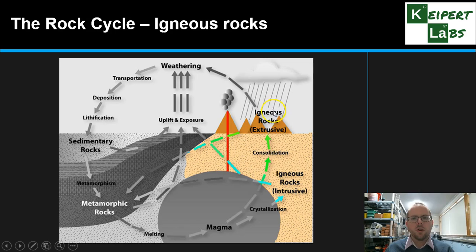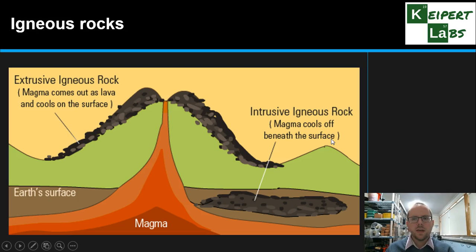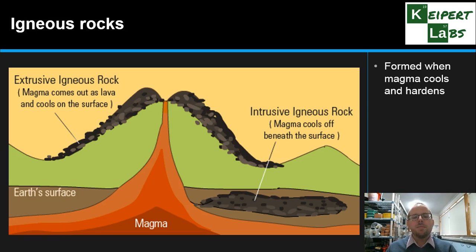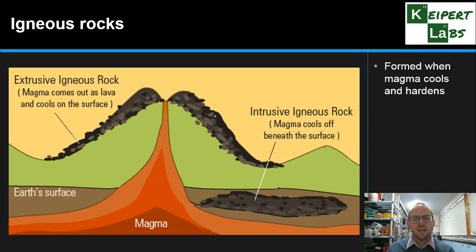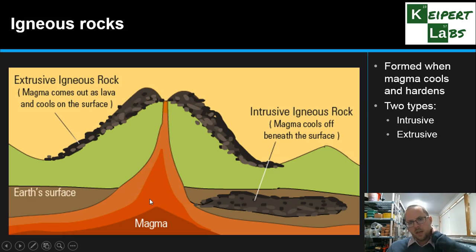We're first going to focus on igneous rocks on the right-hand side. Igneous rocks originate from magma that exists under the surface of the Earth — molten, hot, liquid rock just underneath the crust. There are two types of igneous rocks: intrusive and extrusive.